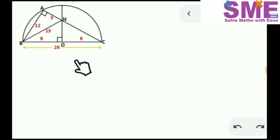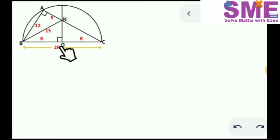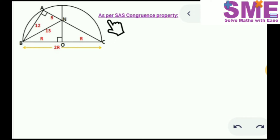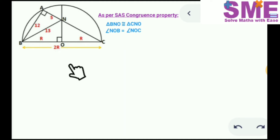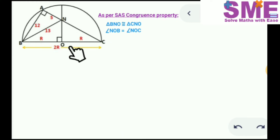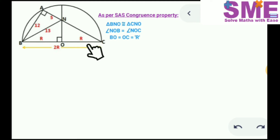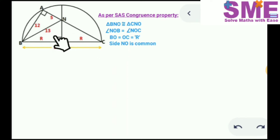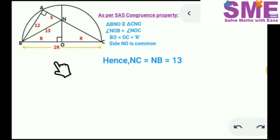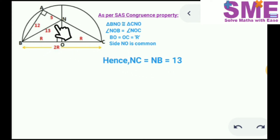Now focusing on triangles BNO and CNO: by SAS congruence, triangle BNO is congruent to triangle CNO, because angle NOB = angle NOC = 90°, side BO = side OC (both equal to the radius), and side NO is common to both triangles. Hence NC = NB = 13.